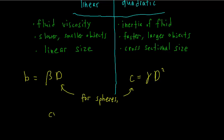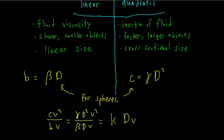With this approximation, we can see the ratio of the quadratic to linear components for any sphere. This ratio is a constant times the diameter times the velocity. So when you have a bigger or faster object, this ratio is larger, meaning the quadratic is more important. If the diameter or velocity is very small, the linear component dominates. Many times we can just ignore one and take the other, but for some objects both must be included.